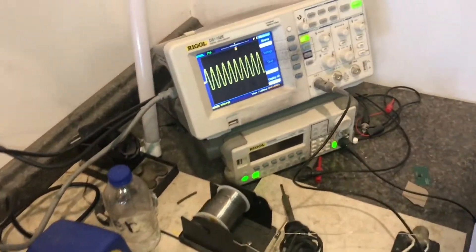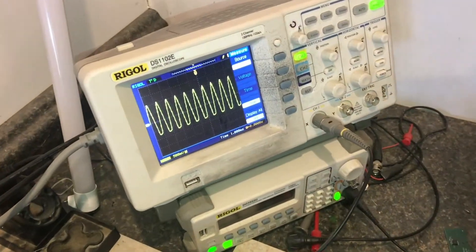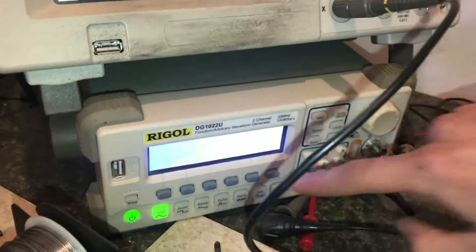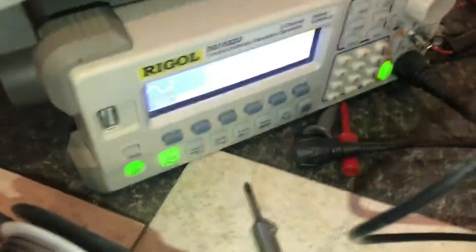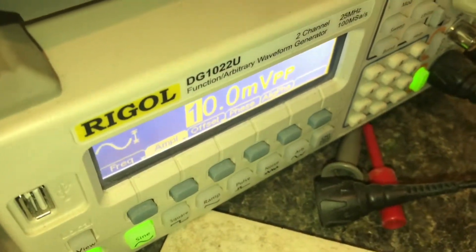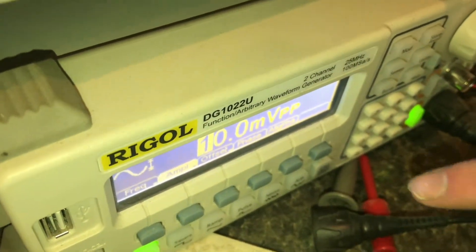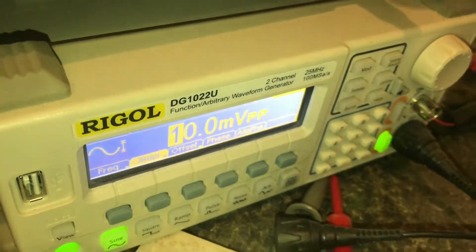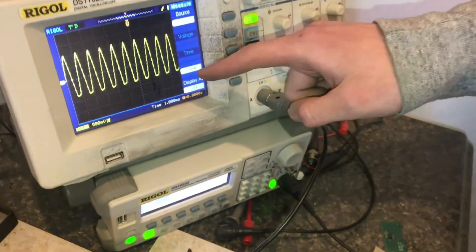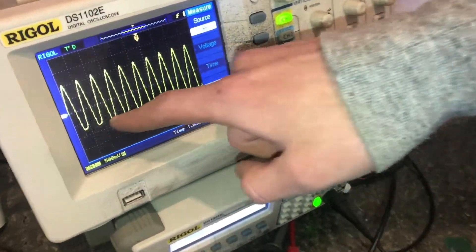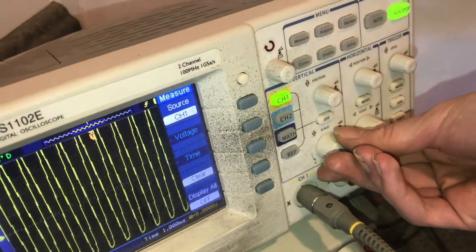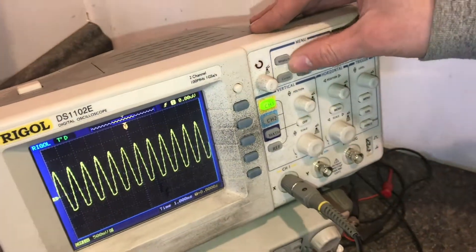So I actually do have this running on the oscilloscope right now. It has a, let's see, the function generator's creating a ten millivolts peak to peak output sine wave at one kilohertz. And you can see we actually do have some clipping going on, on the bottom portion of the sine wave is being rounded off. So let's take a look and see